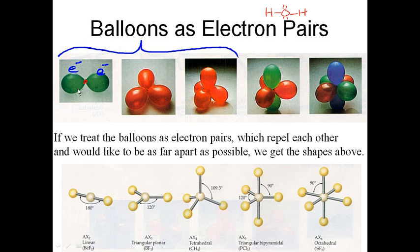Since we're treating bonding and lone pairs as big clouds of electron density, balloon models work fairly well. Like charges repel each other, so the basics of VSEPR theory say that if you put two clouds of electron density around the central atom, they'll try to get as far away from each other as possible — leading to 180 degrees. If we put three, they adopt a geometry where the three clouds are in the same plane, 120 degrees away from each other — that's called trigonal planar. Linear has two clouds.